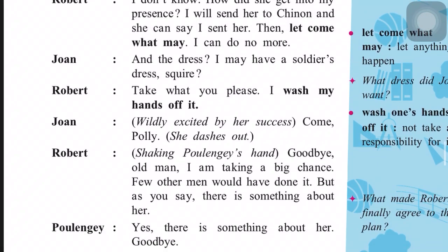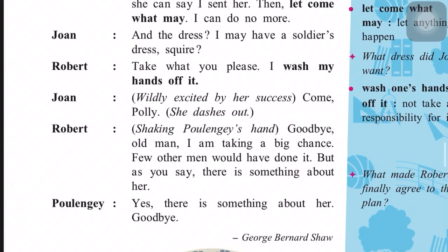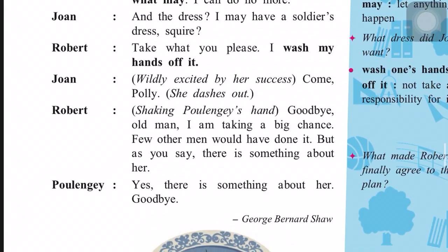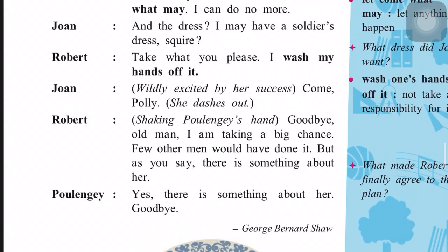Robert, shaking Polenji's hand, says: 'Goodbye, old man. I am taking a big chance. Few other men would have done it. But as you say, there is something about her.' Polenji replies: 'Yes, there is something about her. Goodbye.' That is where the scene ends. This scene is very important — we don't know the result within it, but we know from history that it was because of Joan that the French won so many battles, that she inspired the soldiers to fight again. If she could not have convinced Robert, she would never have been able to win battles for France. This scene shows what kind of character this young girl, Joan of Arc, was. That comes to the end of the story. You can now go look at the questions. Thank you, guys.